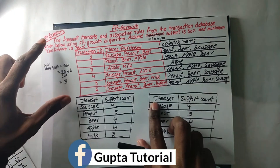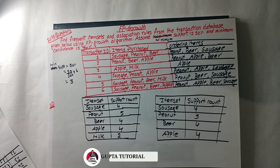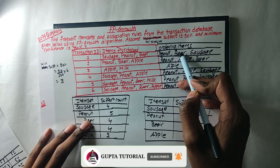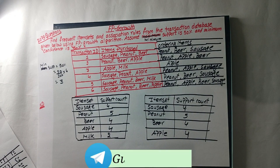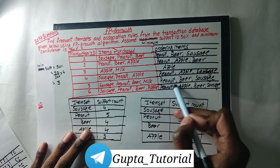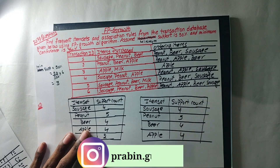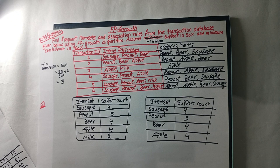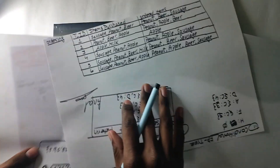Welcome to the second question of the 79 question. In today's video, we will check out the 3 diagram of the ordering item. So, we will check out the ordering item.